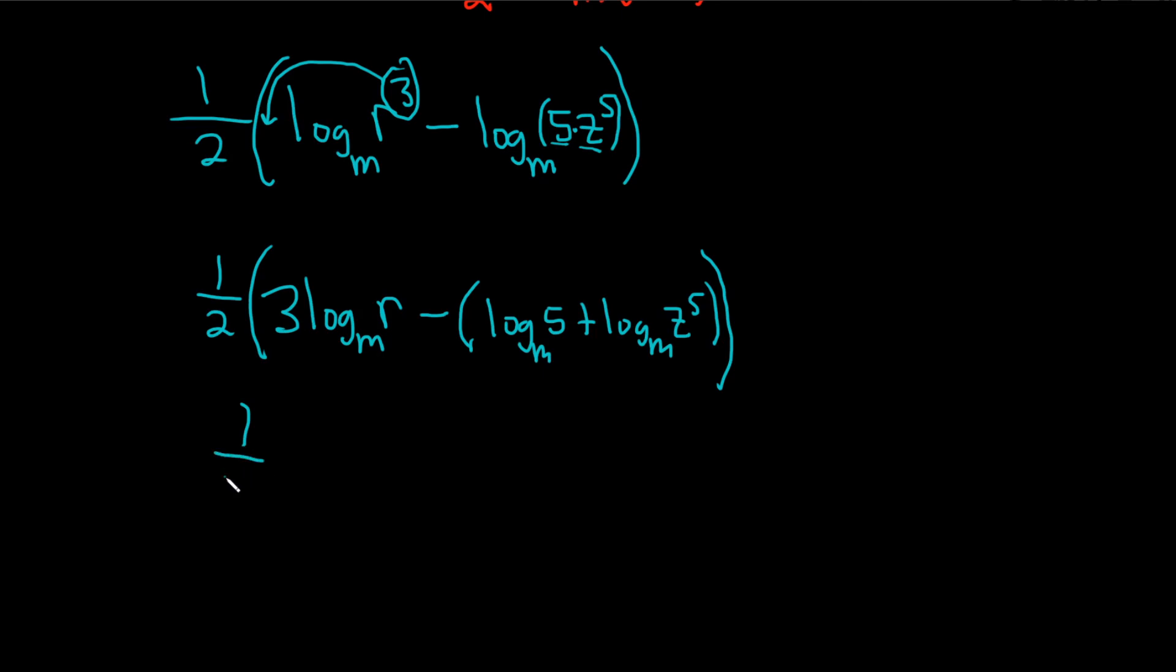So this is one-half parentheses 3 log base m of r. Here we can distribute this. There's really an invisible minus 1 here. So this is minus log base m of 5, and then minus 1 times this will turn it to a minus, and then let's go ahead and bring down this 5 using the power rule. So we'll have minus 5, distributing the negative 1 and bringing down the 5 at the same time. Log base m of z.